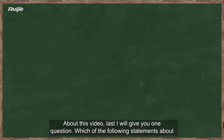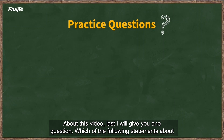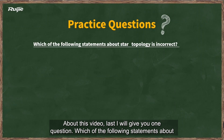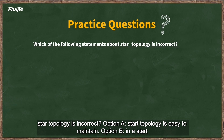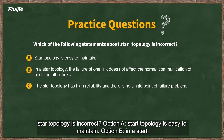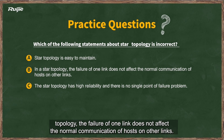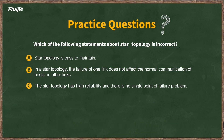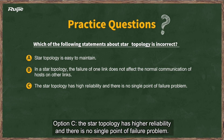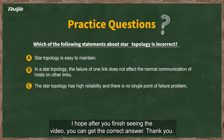About this video, I will give you one question. Which of the following statements about star topology is incorrect? Option A: Star topology is easy to maintain. Option B: In a star topology, the failure of one link does not affect the normal communication of hosts on other links. Option C: The star topology has higher reliability and there is no single point of failure problem. I hope after you finish watching the video, you can get the correct answer.